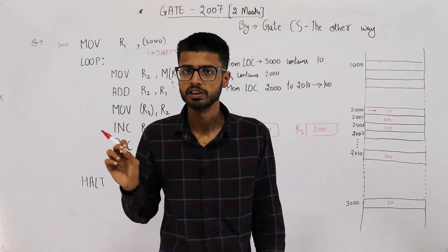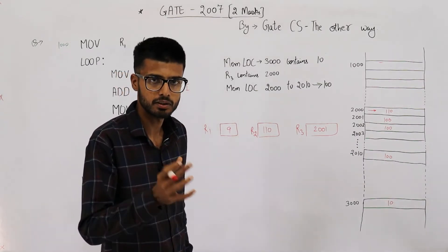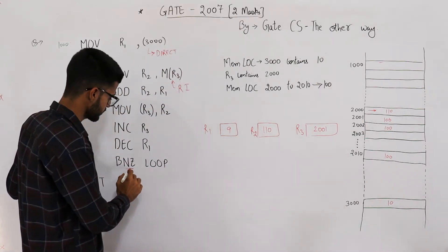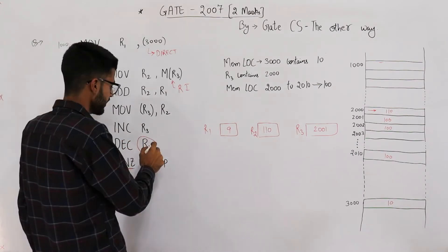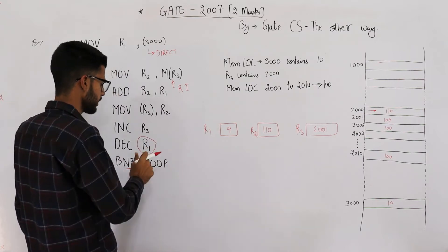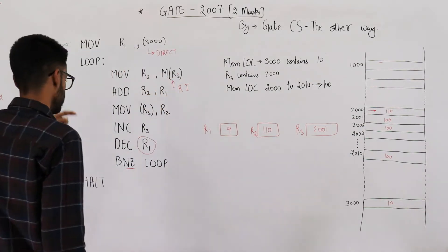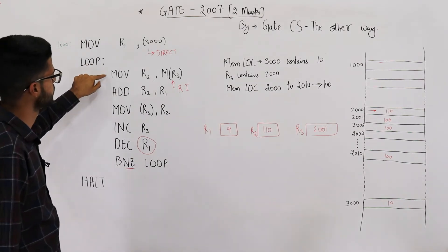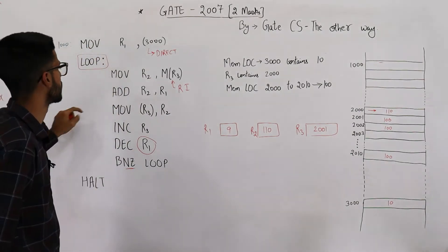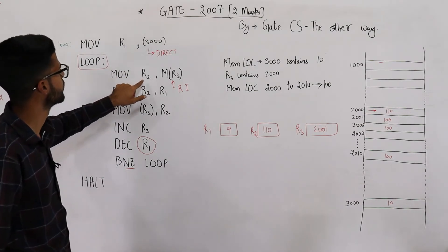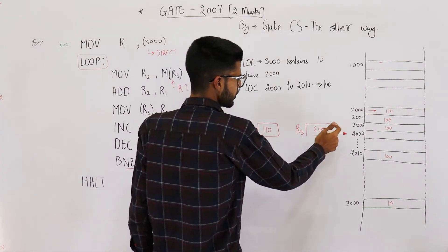The next line is BNZ loop. BNZ is a conditional branch instruction meaning 'branch if not zero.' You jump only when the value generated by the last instruction is not zero. Since the value here is 9 — not zero — we jump back to the label 'loop,' which points to the instruction MOV r2, M[r3].